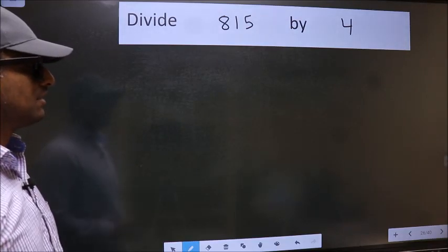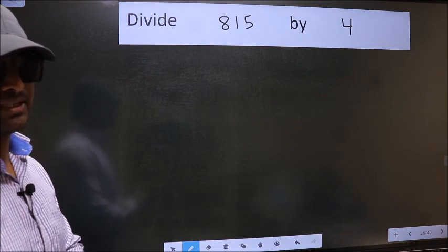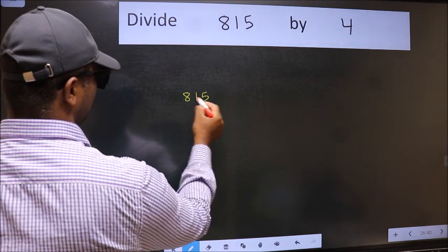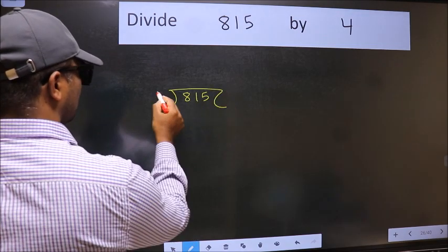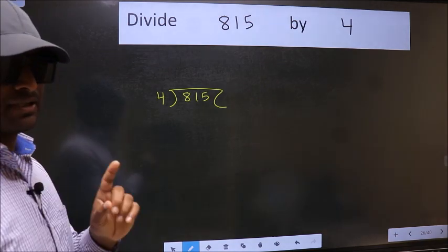Divide 815 by 4. To do this division, we should frame it in this way: 815 here and 4 here. This is step 1.